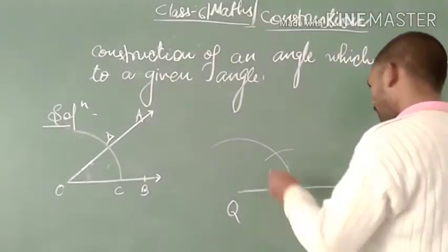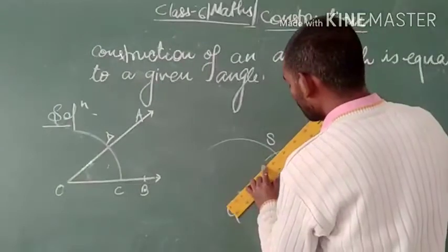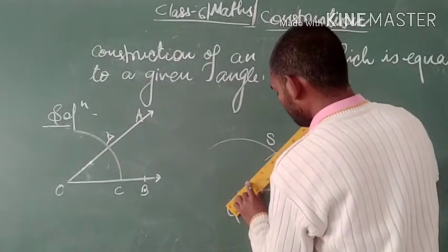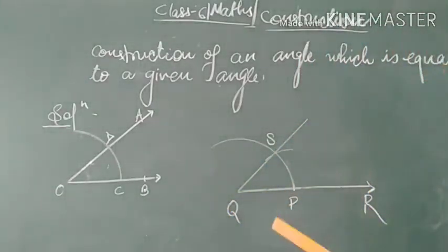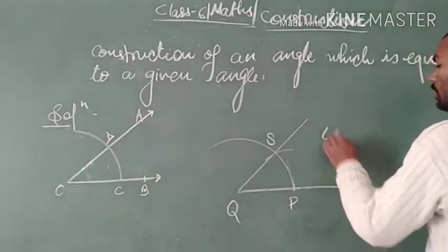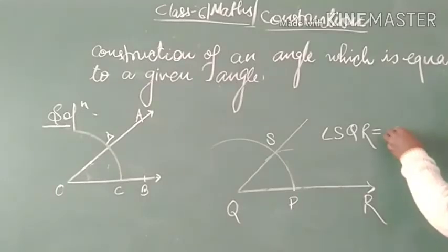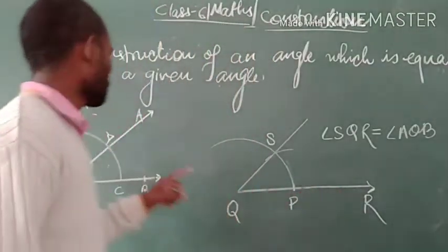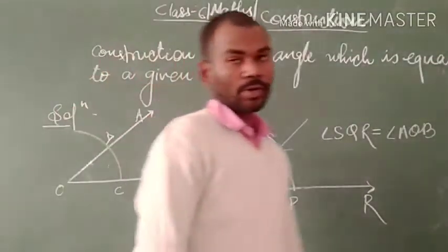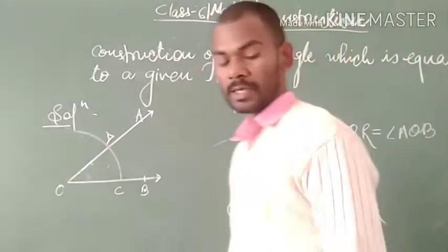Now give the name of this point as S. Join the point S to the point Q. Therefore, angle SQR is equal to angle AOB. So in this way our construction is completed. Angle SQR is equal to angle AOB. This is the construction of an angle which is equal to a given angle, and I hope that it is clear to everyone.